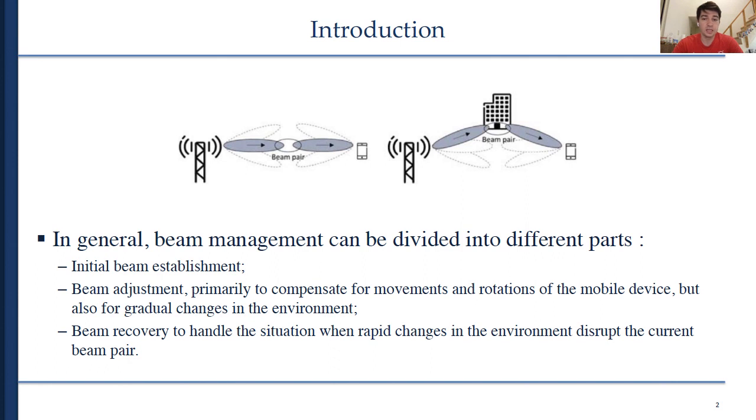In 3GPP, this is referred to as downlink-uplink beam correspondence. It's a similar concept to what we have for channel reciprocity. If we assume the channel doesn't vary very fast, as in the case of low mobility scenarios, then we can assume that optimal receive beamforming is also optimal transmit beamforming for each side.